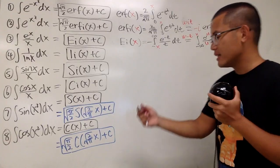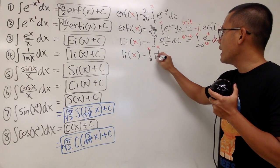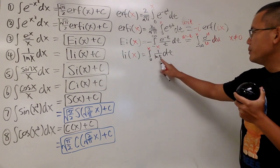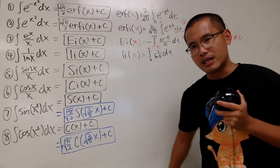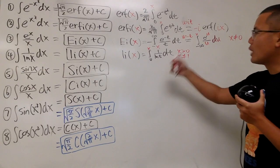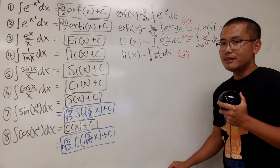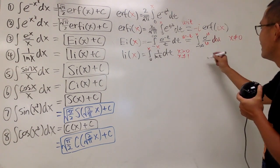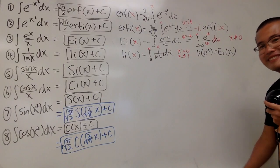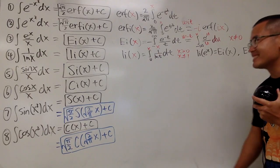Now, we have li of x, the logarithmic integral. This is defined to be the integral going from 0 to x of 1 over ln t dt. We have restrictions: x must be greater than 0, and x cannot equal 1, otherwise we get a divergent result. There's also a really nice connection between li and Ei: li of e to the x equals Ei of x, or equivalently, Ei of ln x equals li of x. Very, very cool — they are just the nicely connected versions of each other.